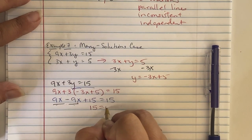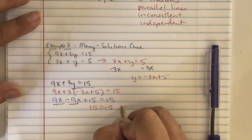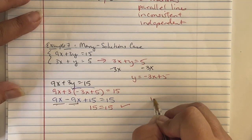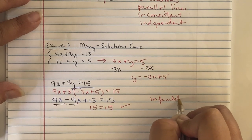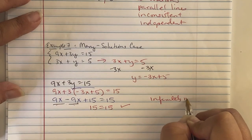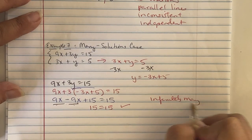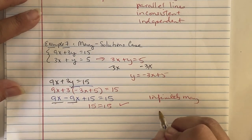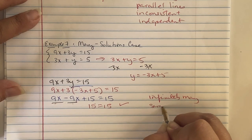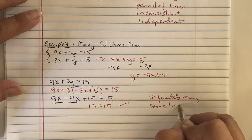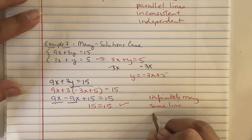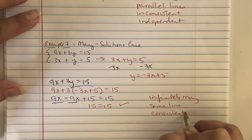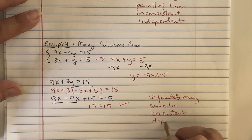We're left with 15 equals 15, which is a true statement. This means there are infinitely many solutions — the two equations represent the same line, so the system is consistent and dependent.